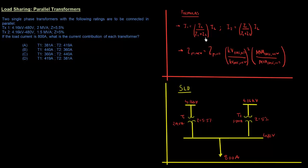The first formula relates the load current to the current contribution from each of two parallel transformers — we'll derive this shortly. The second formula involves the per-unit method, where we convert an impedance from one base to another — from an old MVA and voltage base to a new one. I'll explain this when we reach that step.